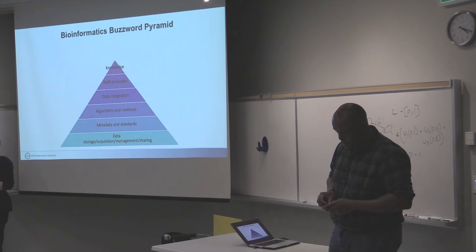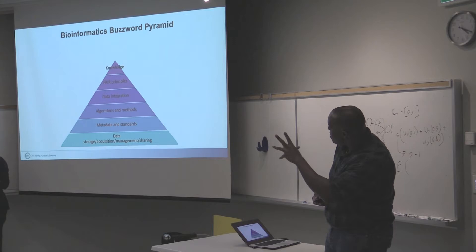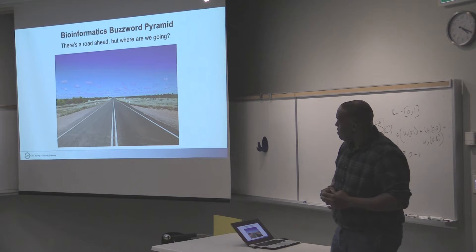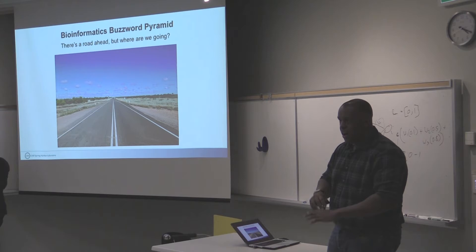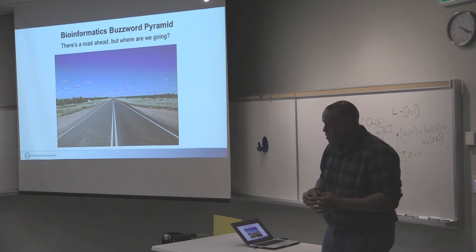There's a whole bunch of buzzwords that come up when we talk about bioinformatics — data, metadata, and standards. These are things people say you probably need to learn about. Maybe this pyramid is correct; I don't know if these are in the right order or the right things. But there is a road ahead. Everyone feels that bioinformatics is important, we should be doing more of it — but aside from those buzzwords, it's just this open thing where we need to make progress but may not know how or where or why or what.